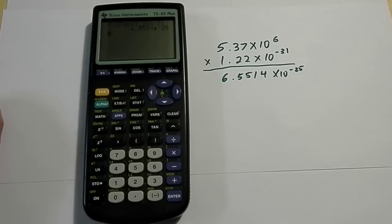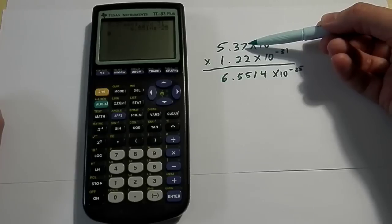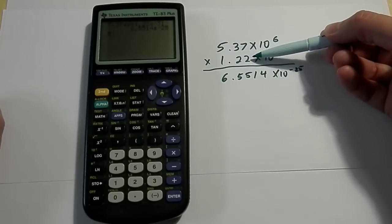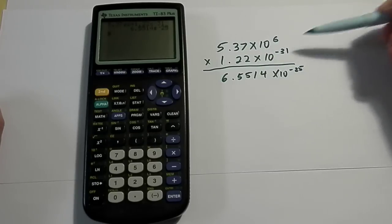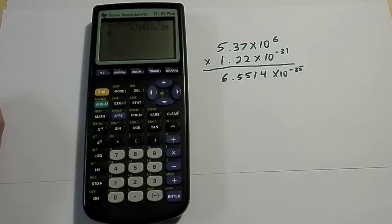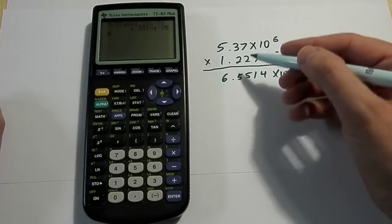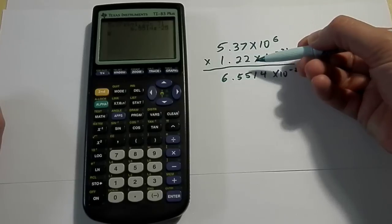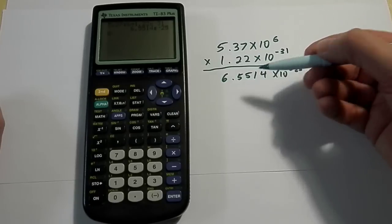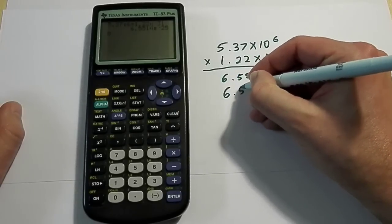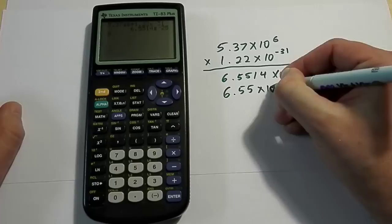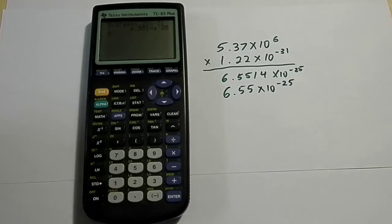Now if I was being really picky and I was paying attention to something like sig digs, I would notice that the two numbers that I started with each have three sig digs, the scientific notation part doesn't mean anything there. So all I would do here is say that's a three sig dig number, that's a three sig dig number, I should really be rounding this off to three sig digs also, so that I would have a final answer of 6.55 times 10 to the negative 25. Hope that helps you out.